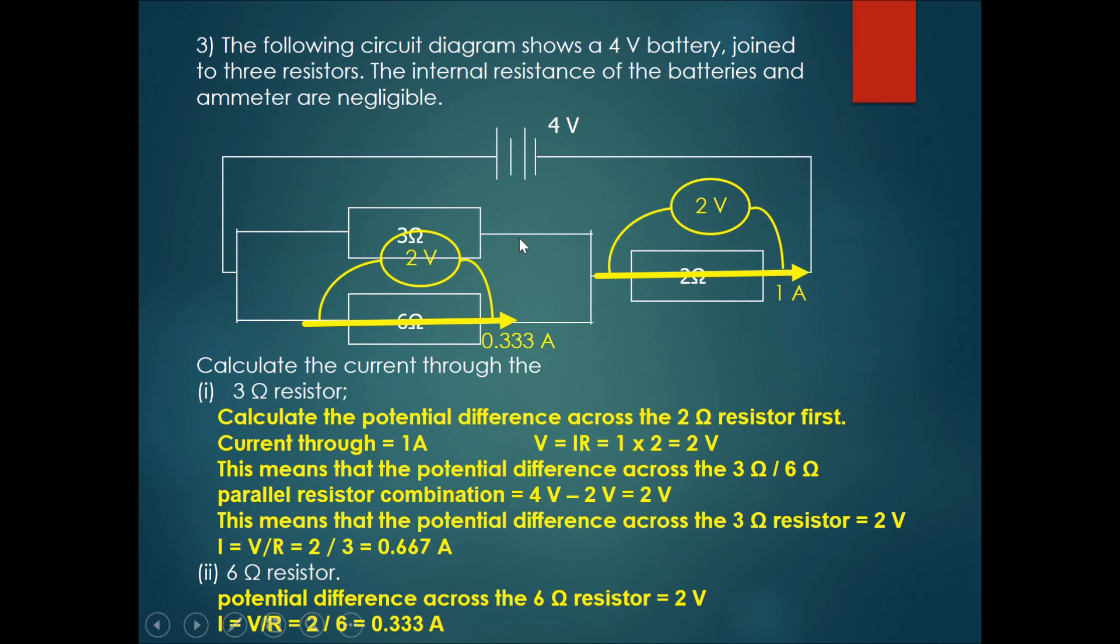So this is cool, because we can see that current going through the first branch is 0.667 amperes. The current going through the second branch is 0.333 amperes. And 0.667 plus 0.333 gets you exactly 1 ampere, which is the current going through the main line.